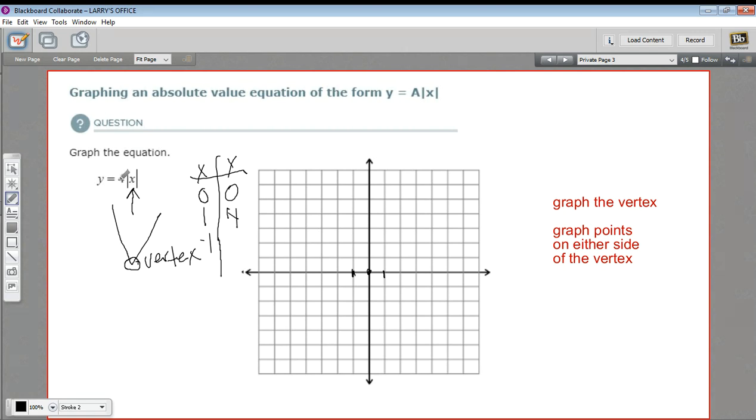I should probably plug in two more points. Well, actually let me graph these first. So negative one, four and one, four. So you can see we're going to have a V that opens upward like this and it's kind of narrow, but let's go ahead and put in two more points.